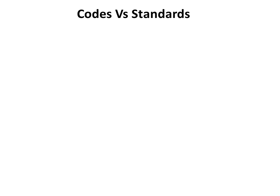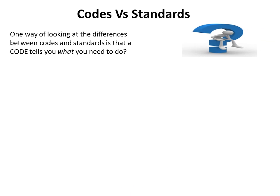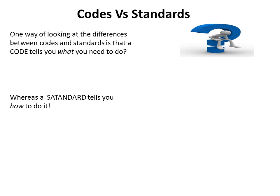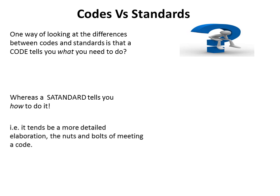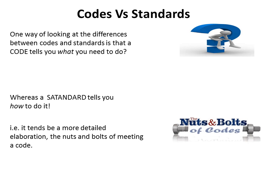What is a code and what are standards? One way of looking at the differences between codes and standards is that the code tells you what you need to do, whereas the standard tells you how to do it — that is, it tends to be a more detailed elaboration, the nuts and bolts of meeting a code.